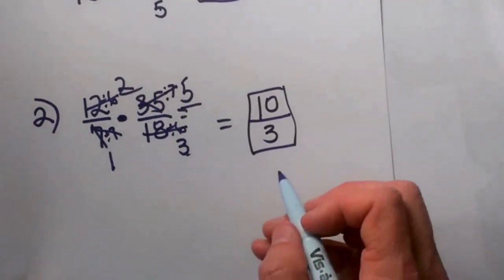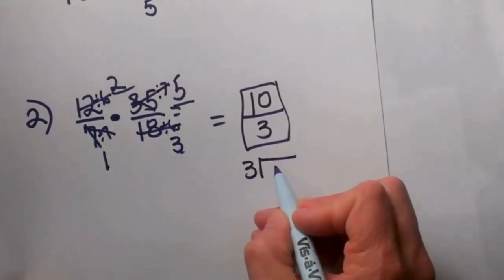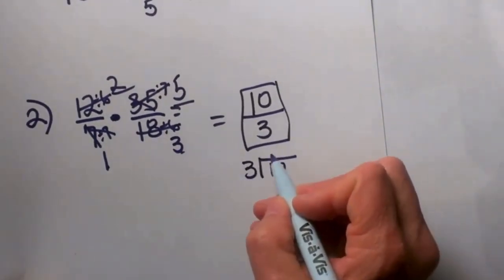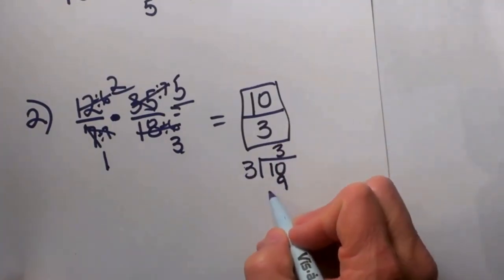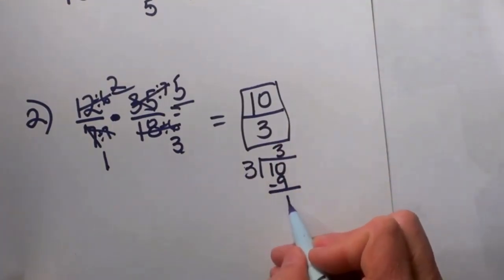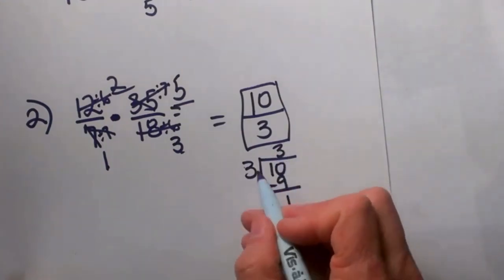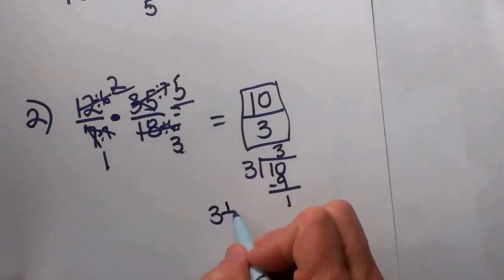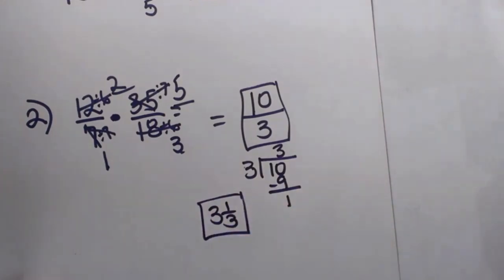Now if you are supposed to write that as a proper fraction, you take 10 and divide it by 3. So 3 goes into 10 three times. That gives me 9. Subtract. So that is 3 whole numbers and 1 third as my remainder. And there we go. So that is 3 and 1 third.